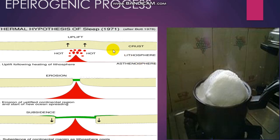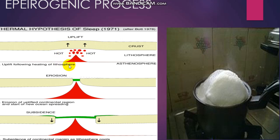As you can see here, epeirogenic processes refer to the upheavals and depressions of land. Why does this upheaval and depression take place? As you can see, the temperature of the magma chamber rises due to internal energies and stresses. At a certain point, the energy rises to such an extent that it uplifts the overlying portion, because the energy tries to find a way out. At a certain point, this energy overcomes the overlying pressure.